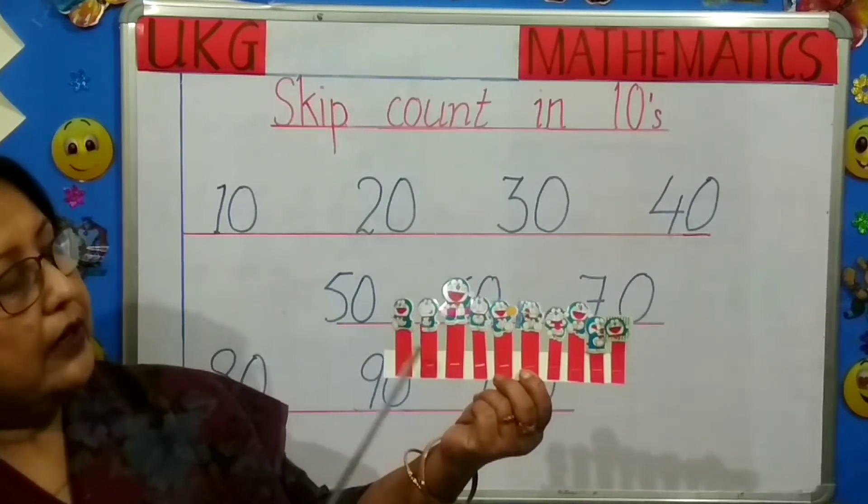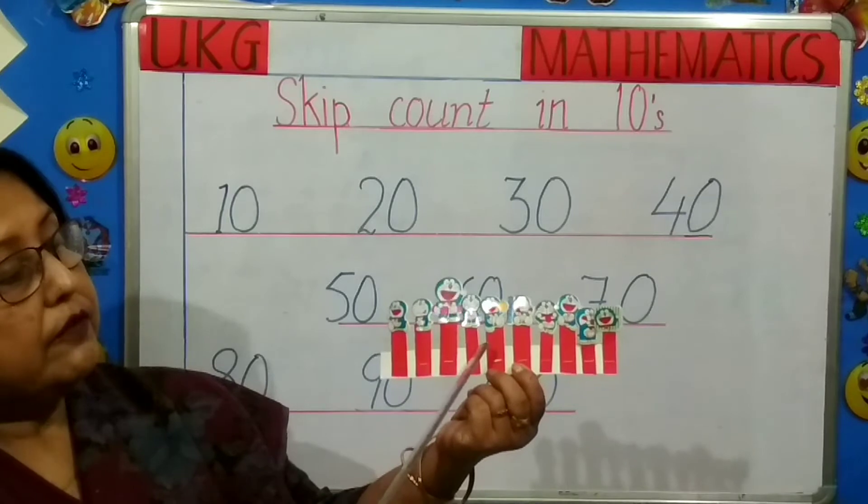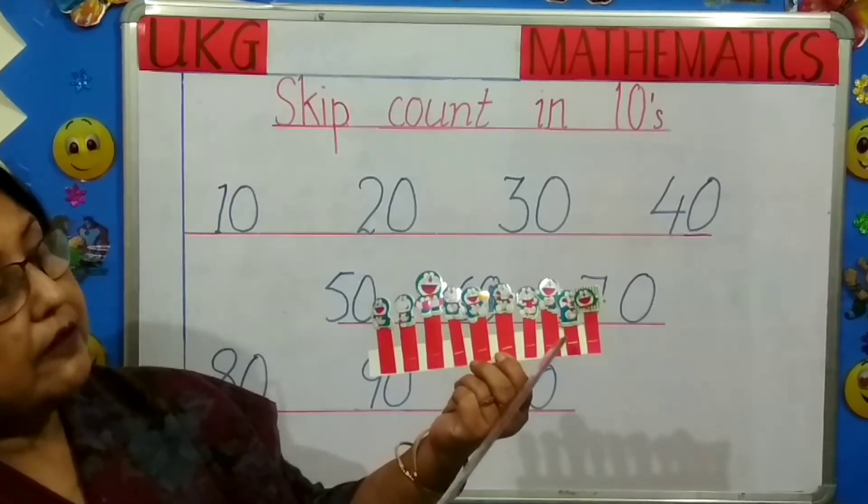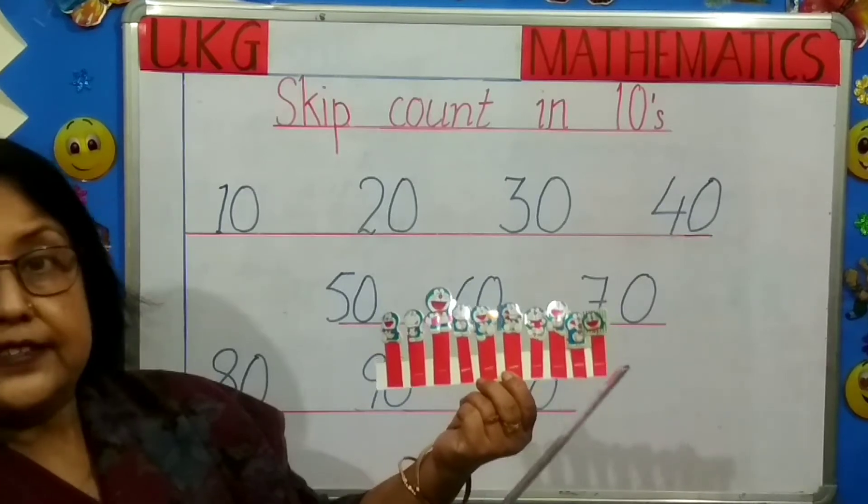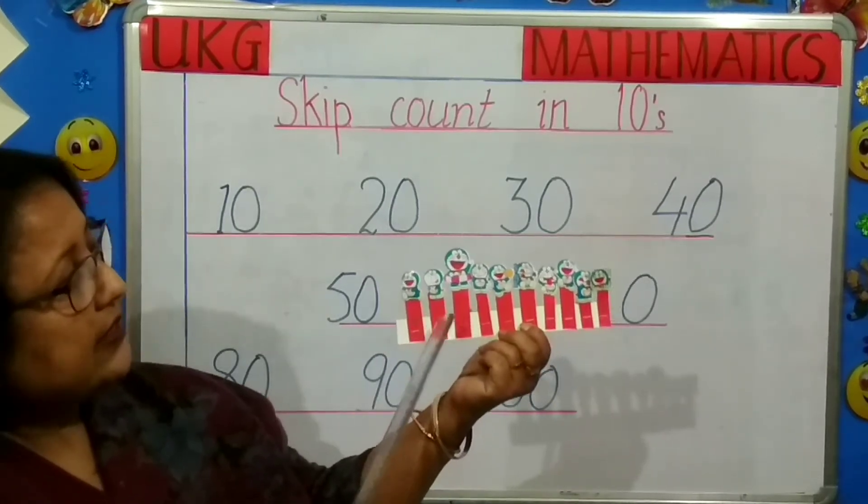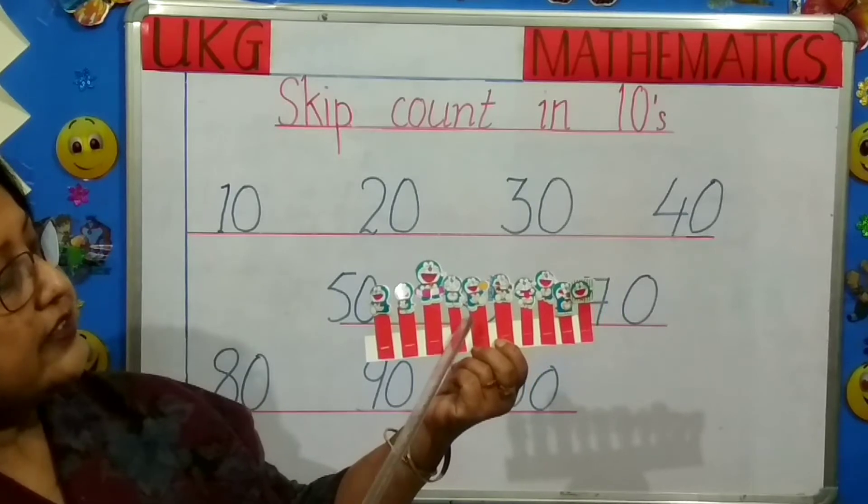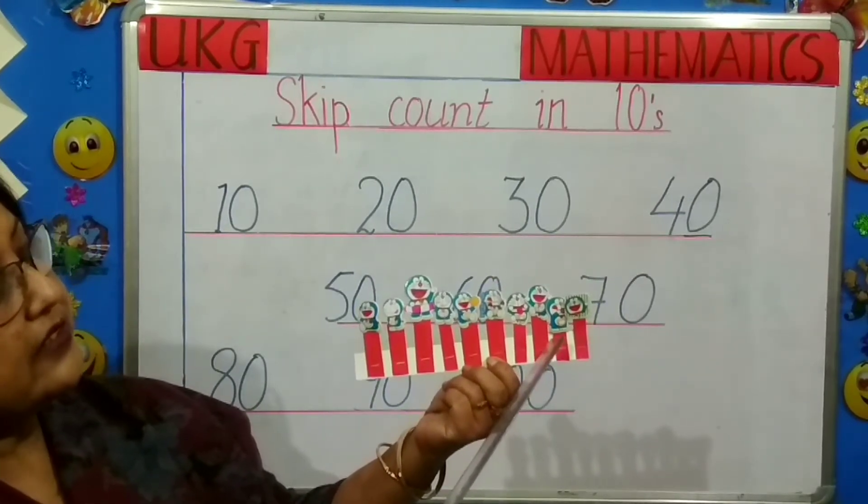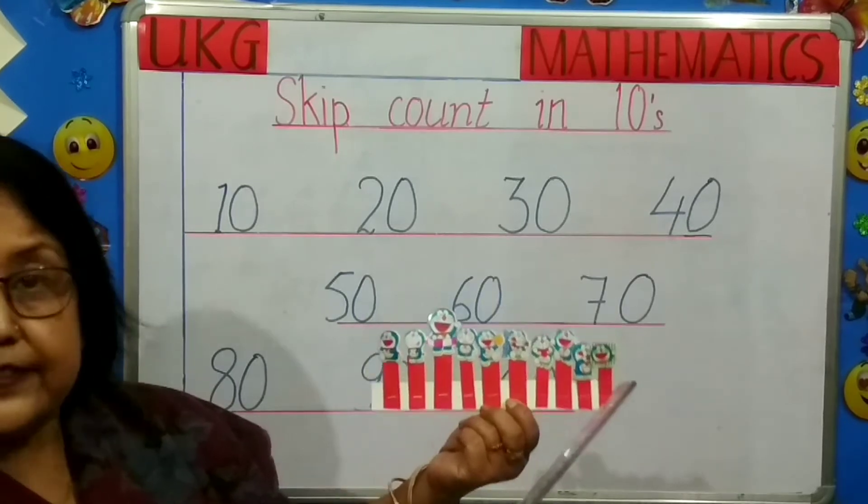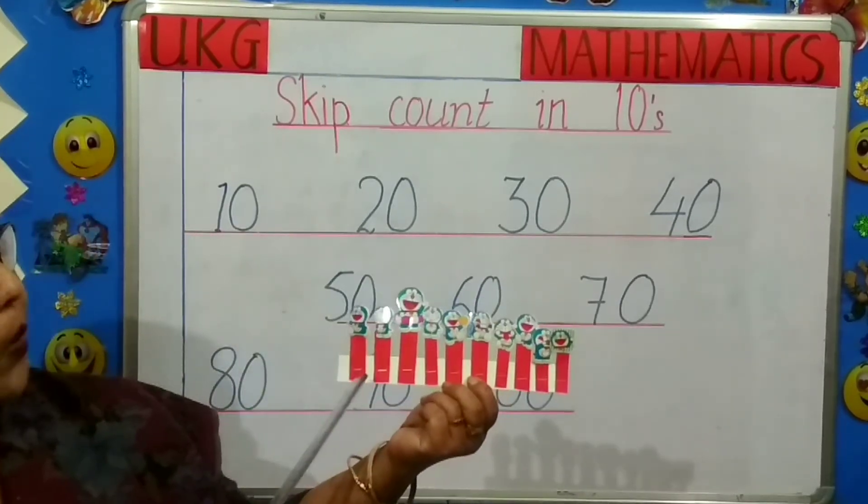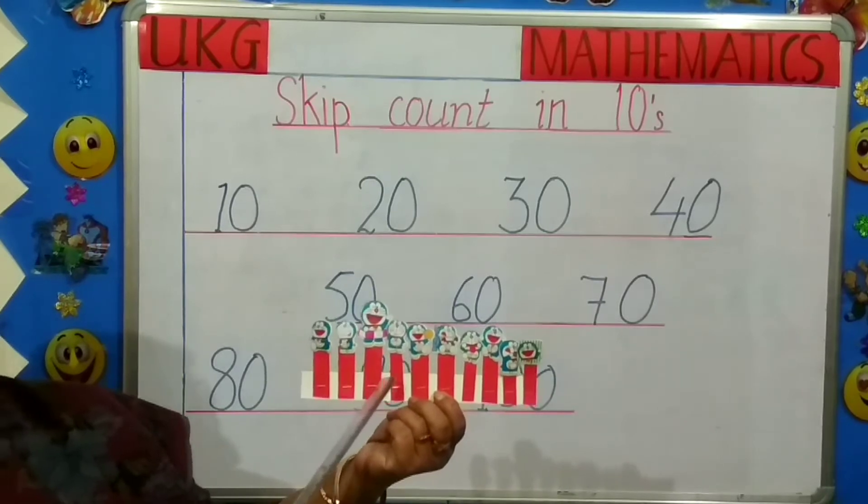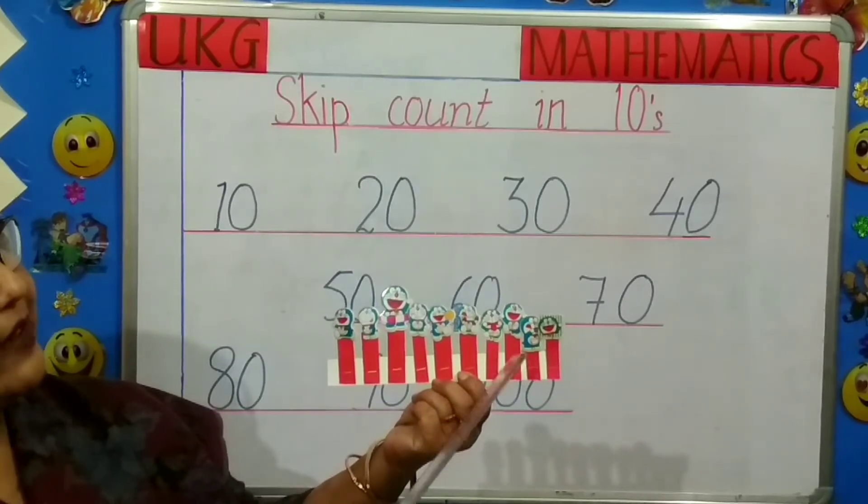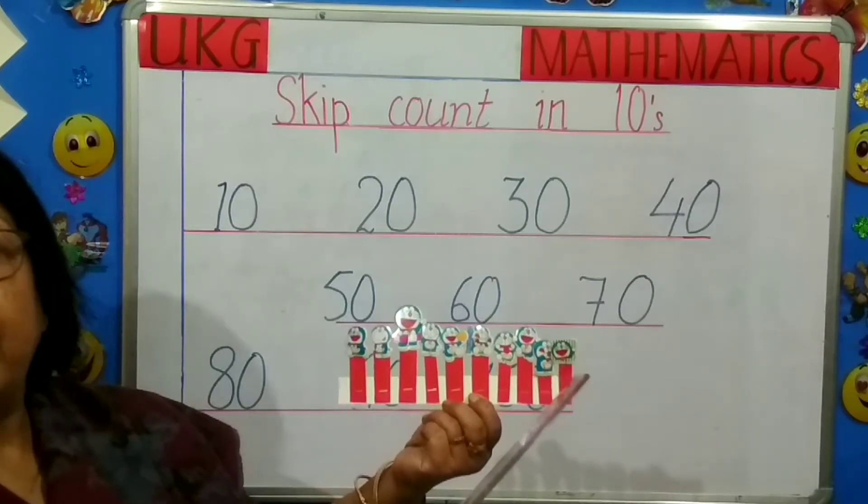Next, 51, 52, 53, 54, 55, 56, 57, 58, 59, 60. Next, 61, 62, 63, 64, 65, 66, 67, 68, 69, 70. Next, 71, 72, 73, 74, 75, 76, 77, 78, 79, 80.